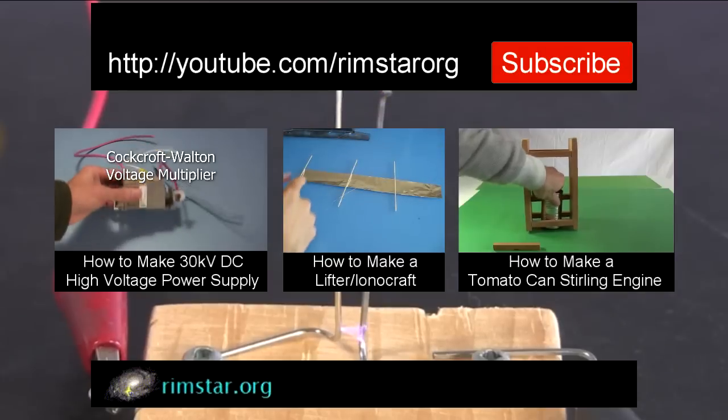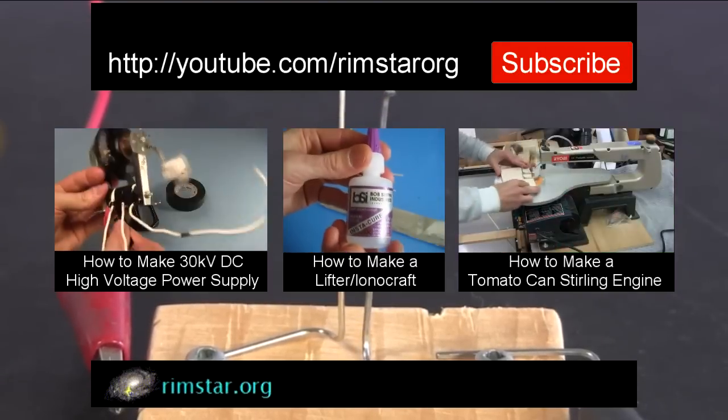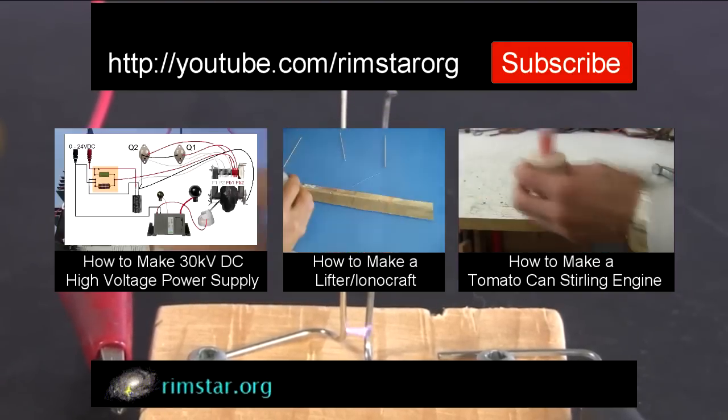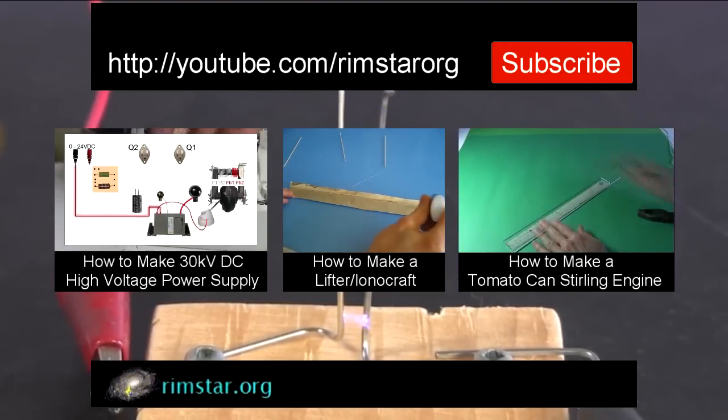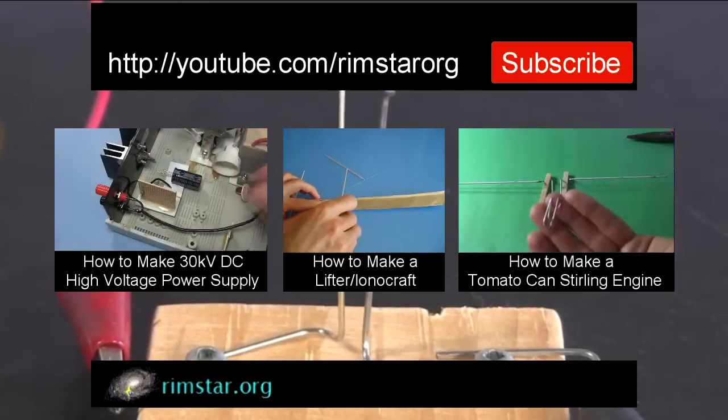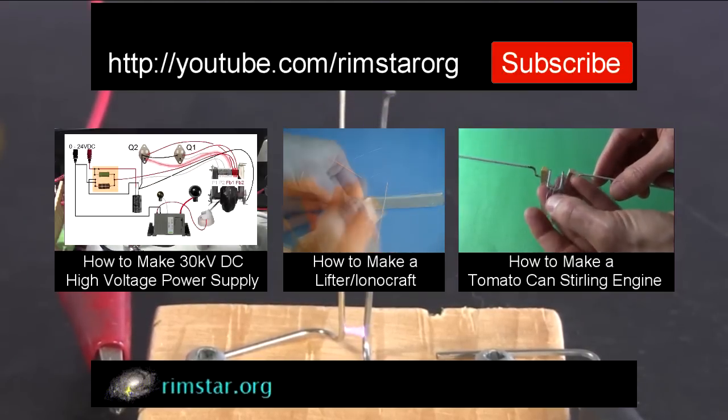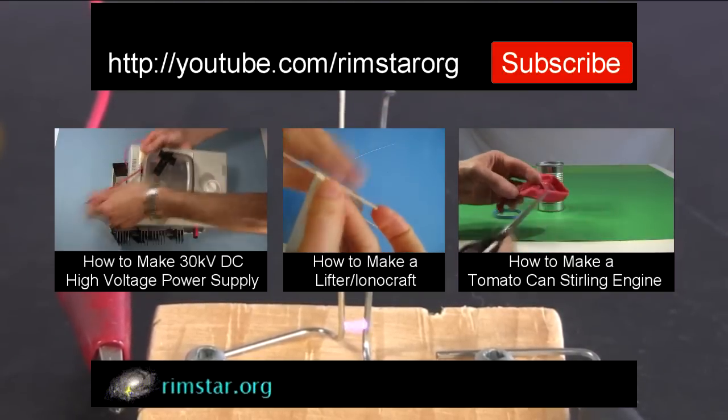That includes one showing step by step how I made my other high voltage DC power supply, another on how to make a lifter that uses these high voltage power supplies to fly, and for variety, one on how to make a sterling engine using a tomato paste can.